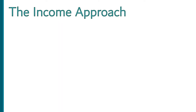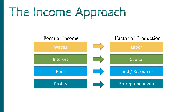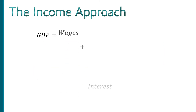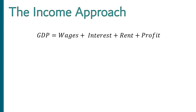The income approach is really just a twist on the production approach. The value added by each business isn't going to disappear — it's going to end up in somebody's pocket in the form of income. Economists like to categorize things into four factors of production: labor, capital, land or resources, and entrepreneurship. Each one of these factors is paid by some form of income. Wages are paid to labor; interest is paid to capital, which are the tools of production like machines, software, factories, and other kinds of things like that. Rent is paid to landlords and resource owners, and profits are paid to the entrepreneurs or the business owners. The income approach computes GDP as the sum of all four types of income.